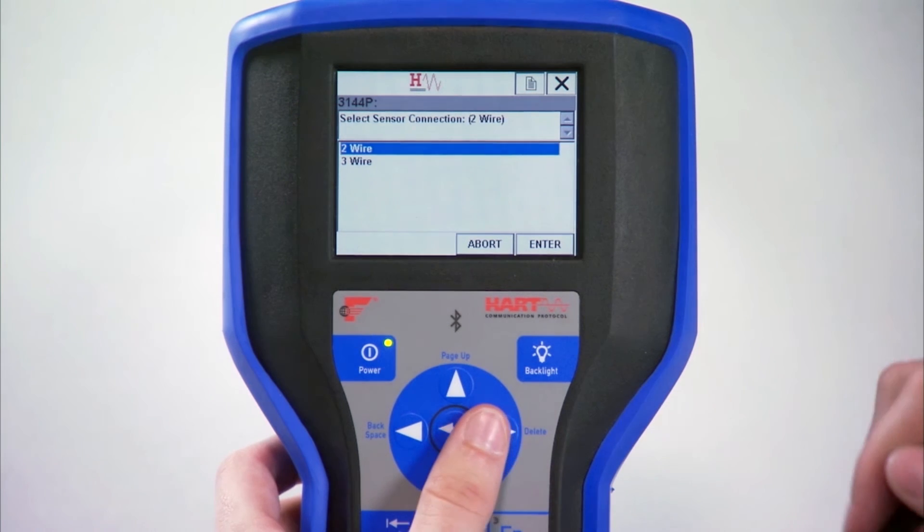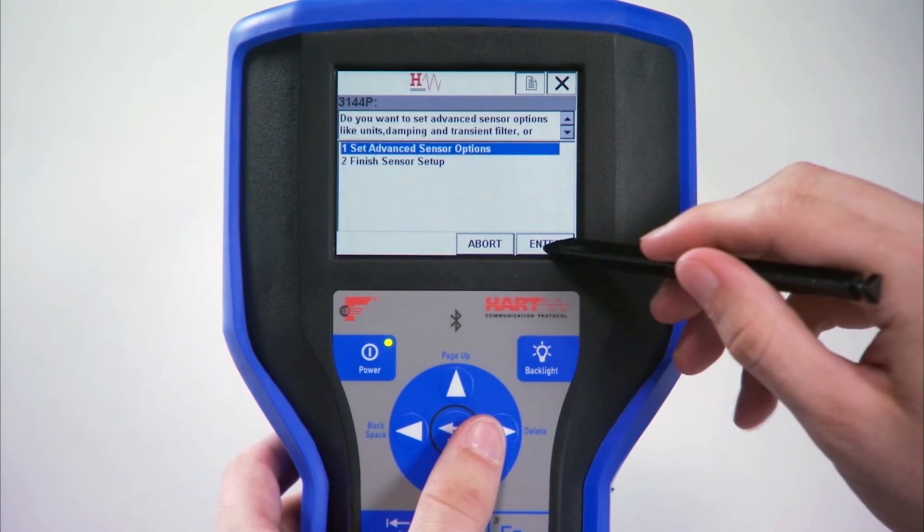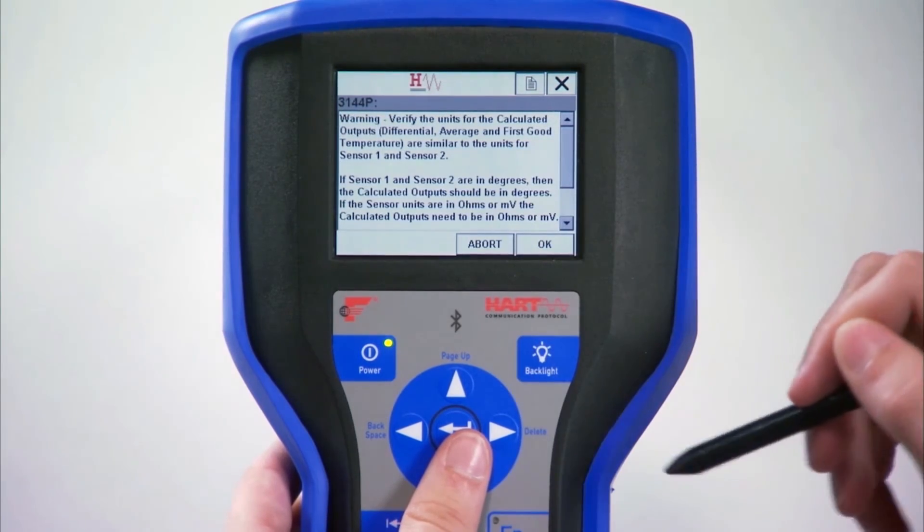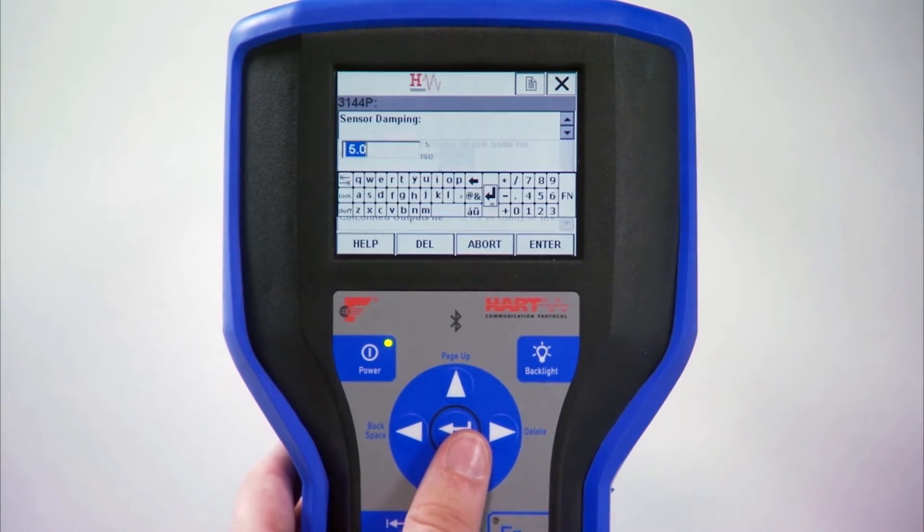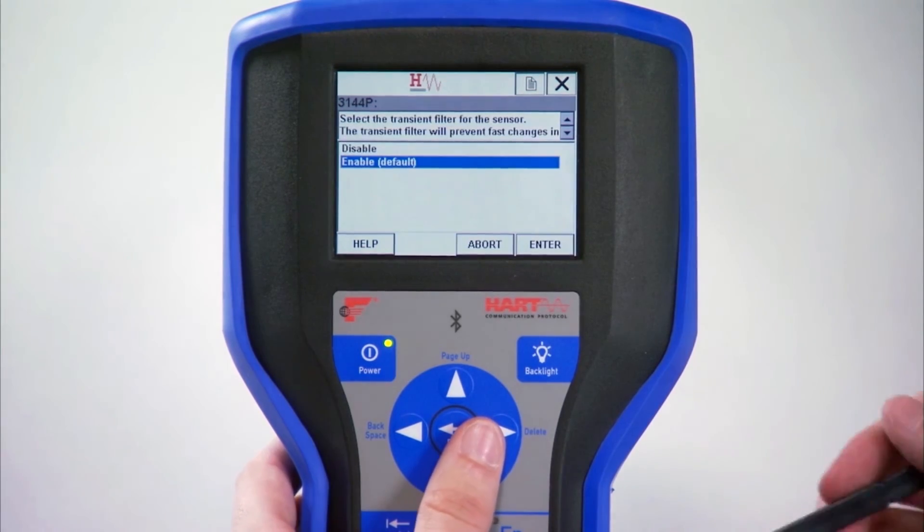Press Enter again to continue the configuration. Select your preferred engineering units and press OK on the following warning screen. Enter your preferred damping value and then select if you want the transient filter enabled.